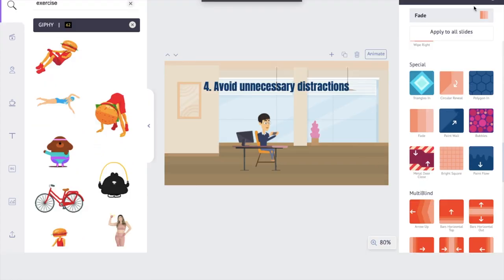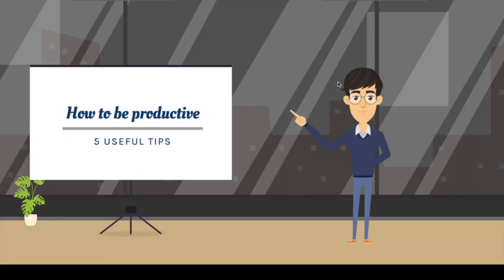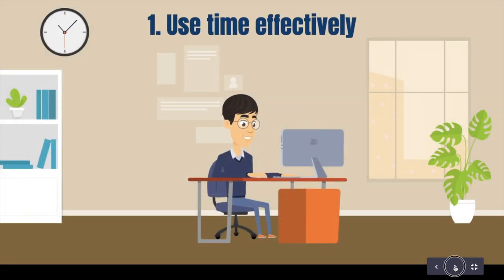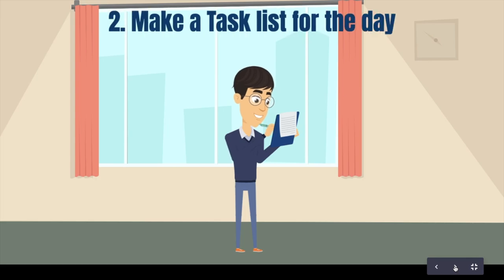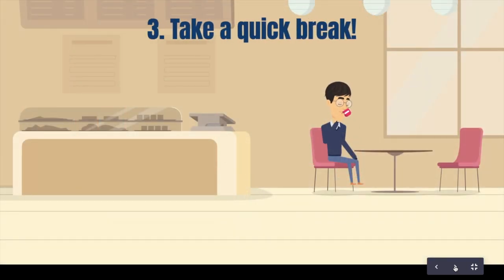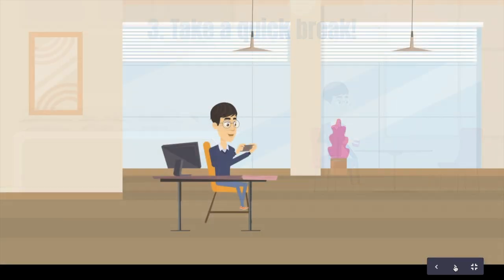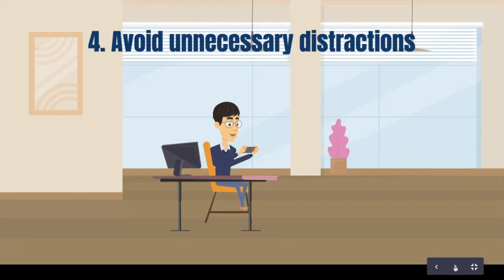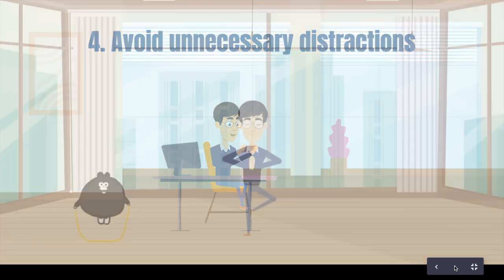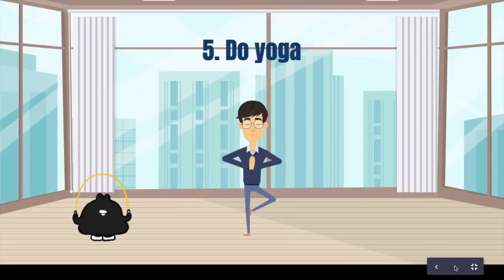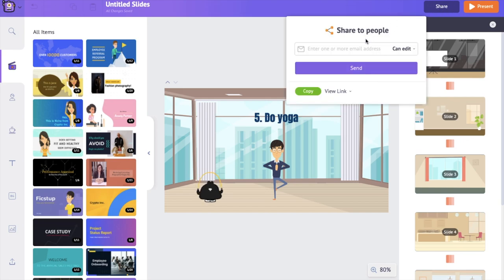To present, click on the 'Present' option at the top — it will open the slides in present mode. Use the arrow buttons at the bottom to move through the slides, or simply click your mouse or use the arrow keys on your keyboard. Press Escape to get back to edit mode. The share option lets you work in live collaboration — just type in the email ID and share the presentation with anyone with a single click.